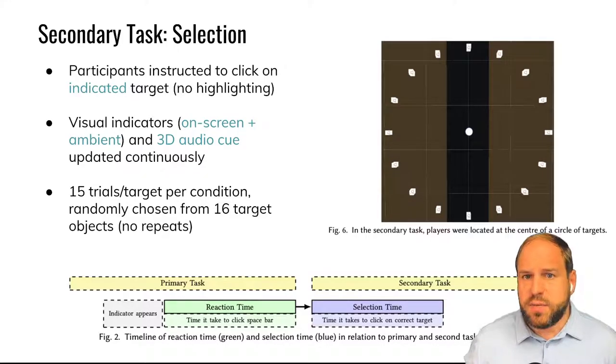For the secondary task, we had 16 white box targets that are placed evenly along the edge of a circle against the ground, the players in the middle of that circle. And we use the same HUD as the previous one. So we have the aerial view here, same type of clicking task, but the targets were not highlighted. So the participants in this case were dependent on the indicator for the selection. So just as the visual indicators updated continuously, the audio indicators updated as well.